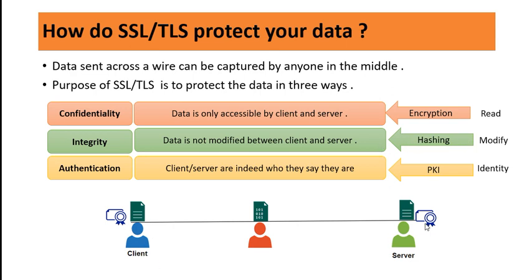Whenever you send data, suppose a middleman modifies a file before it reaches the server and sends the modified file instead. The server then receives an invalid file. To provide integrity, we use hashing so that any third party sitting in the middle cannot see or modify your data. Third is authentication — using PKI (Public Key Infrastructure), client and server verify they are indeed who they claim to be. Only the client and server hold the keys, so the third party cannot see or modify your data.